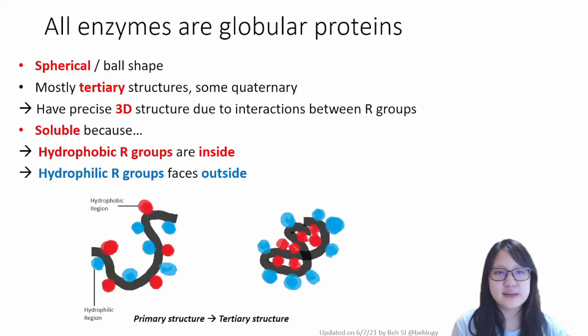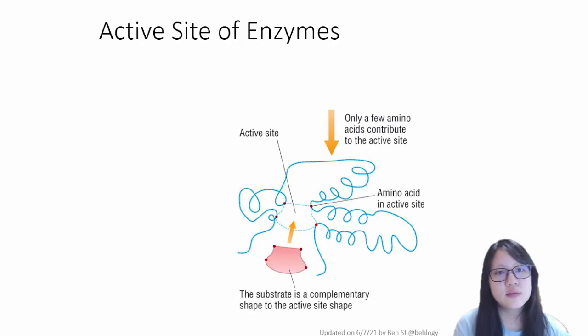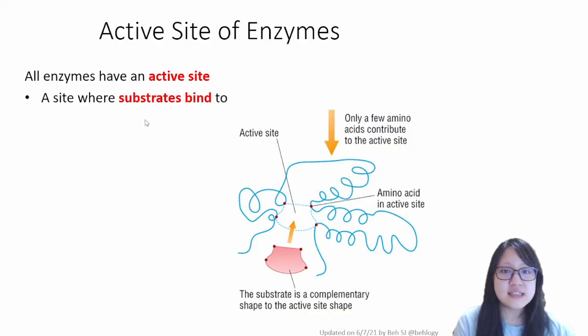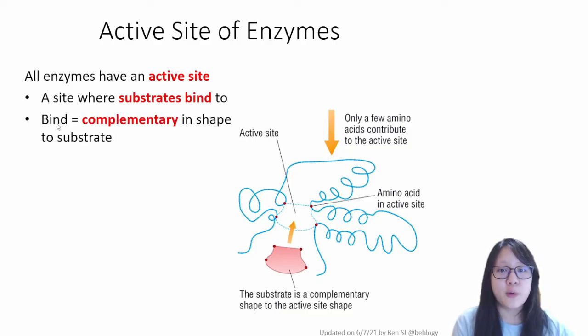All enzymes are globular proteins. Moving on to the next thing. Active site of enzymes. This is an important component of an enzyme. This is the site where substrate binds to, and when we say bind, we mean that the enzyme must be complementary in shape to the substrate, so the substrate is able to fit in.